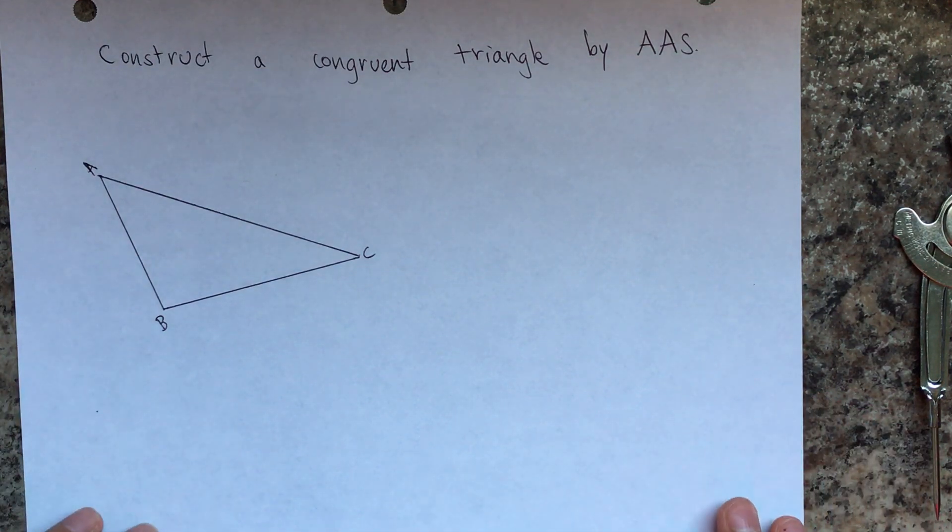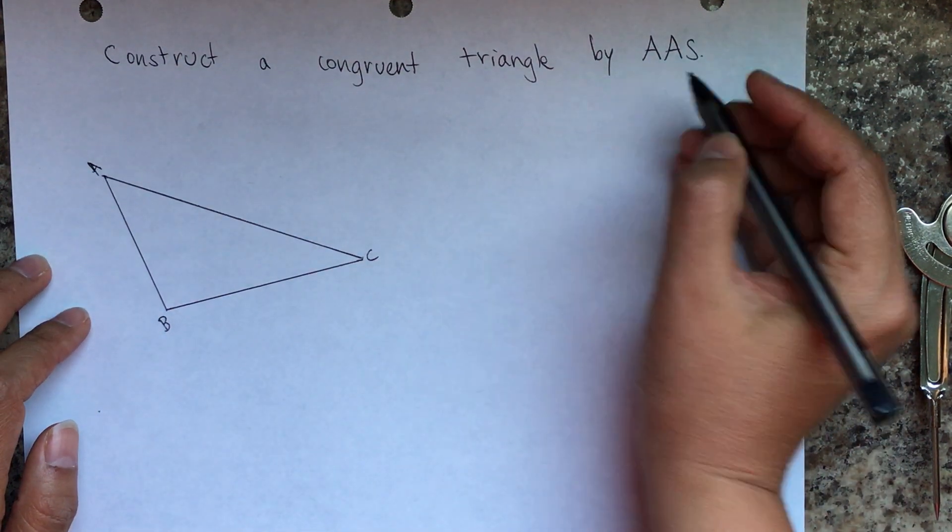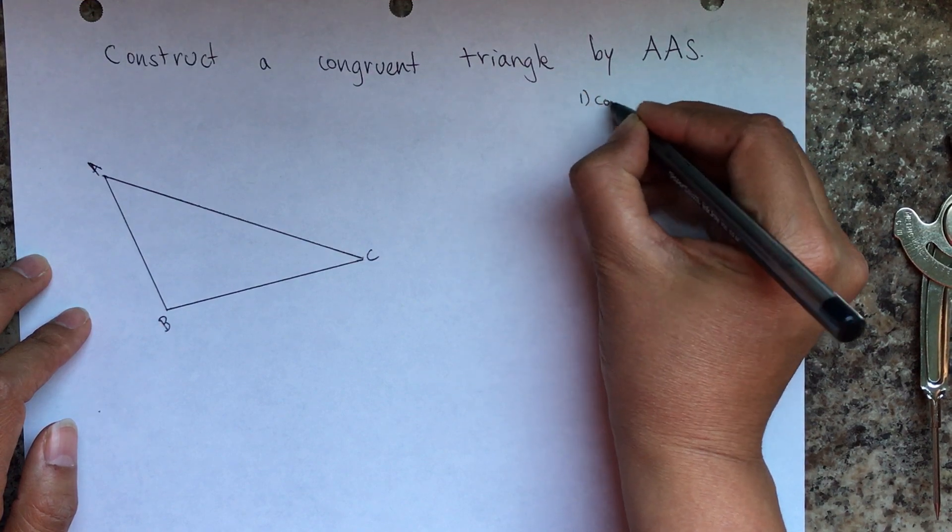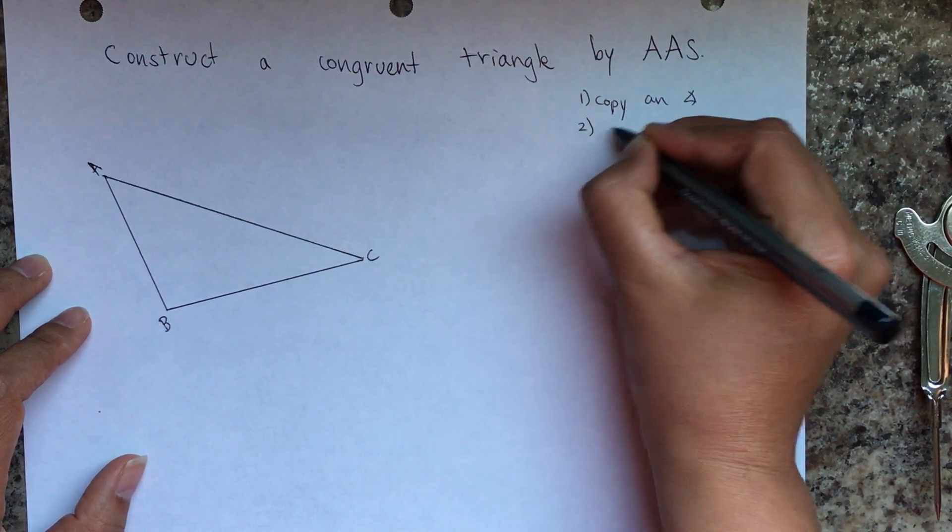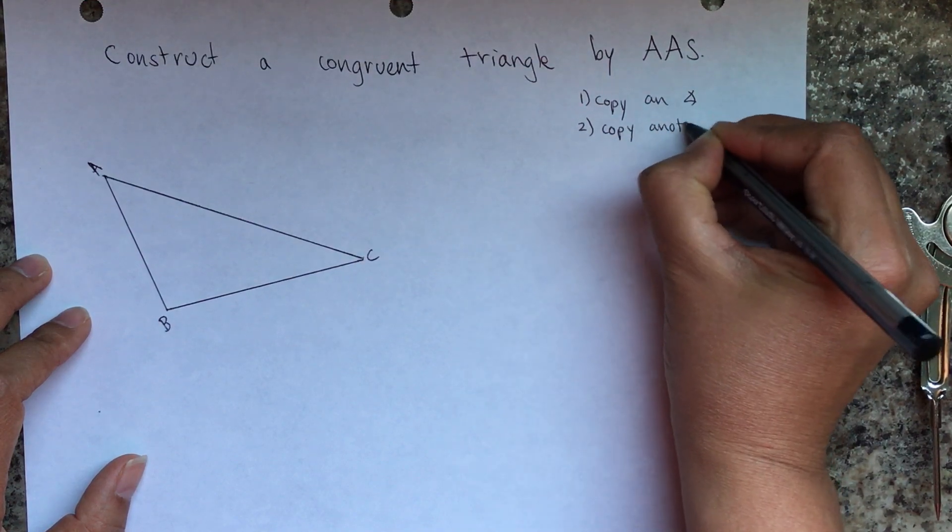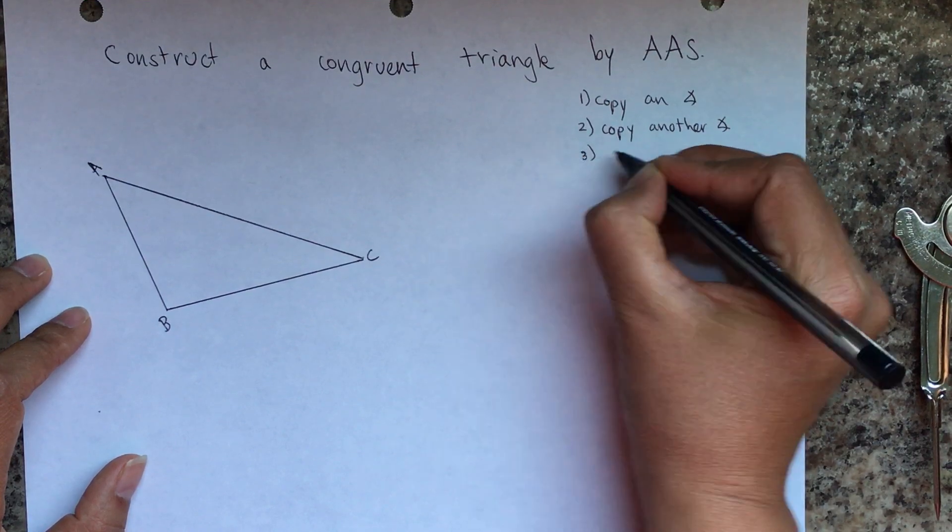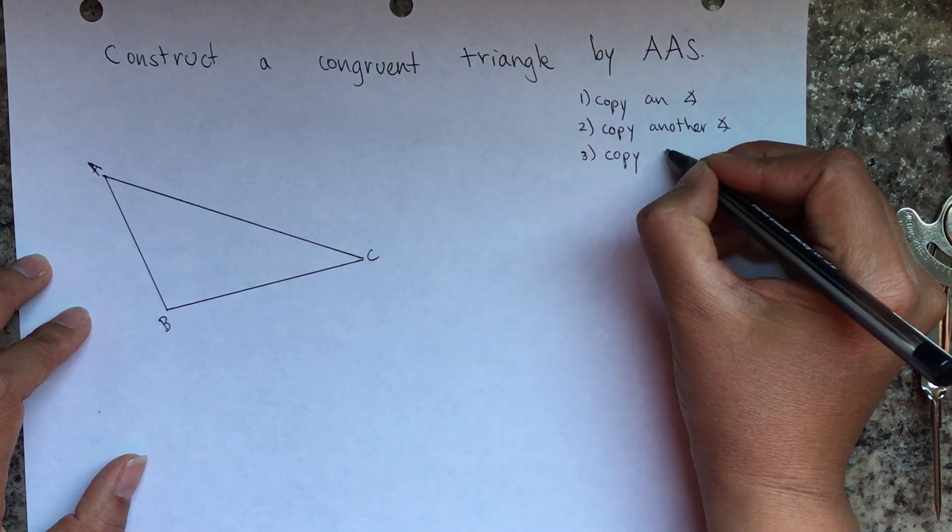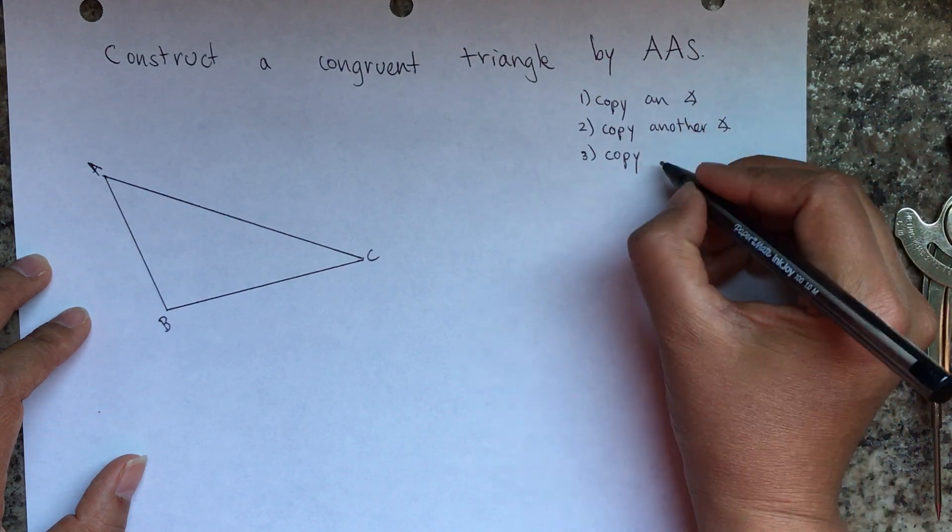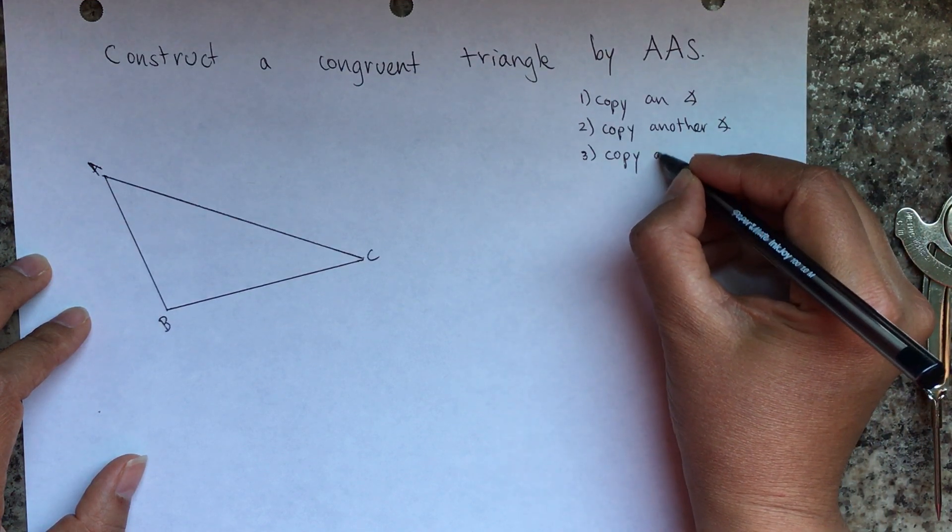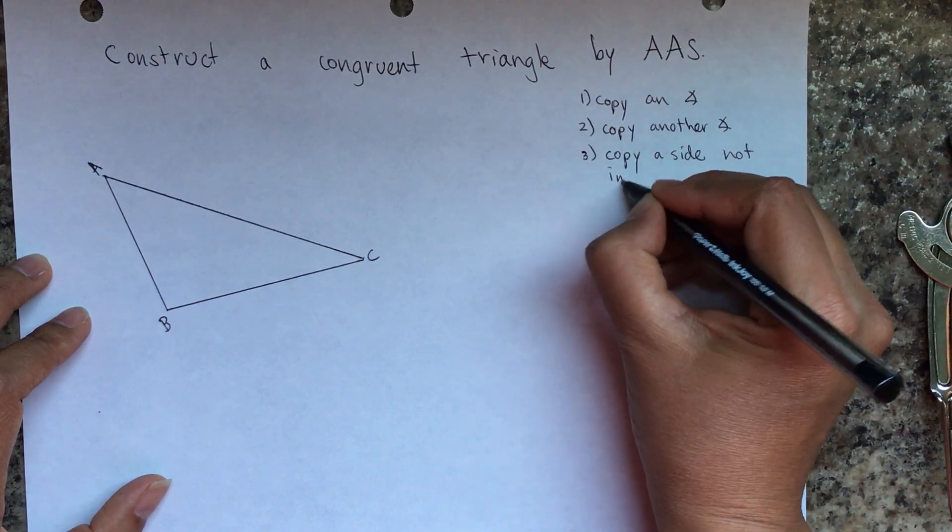Okay, so the first thing that you're going to do is copy an angle, then you're going to copy another angle, and then you're going to copy one side not included by the angle. Copy a side not included means not in the middle, not included by the two angles. And after that, that's where it gets tricky, so I'll come back to that.